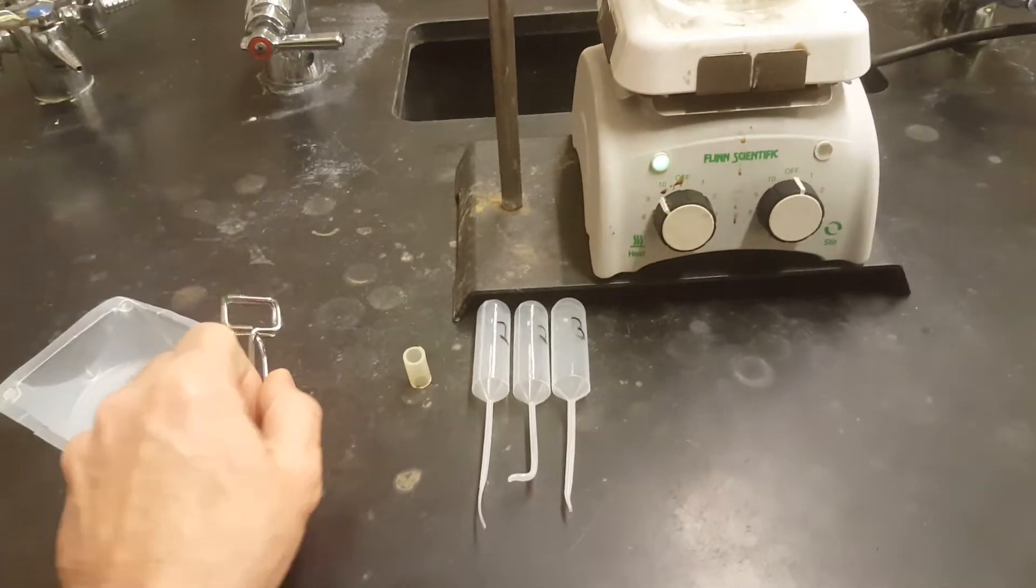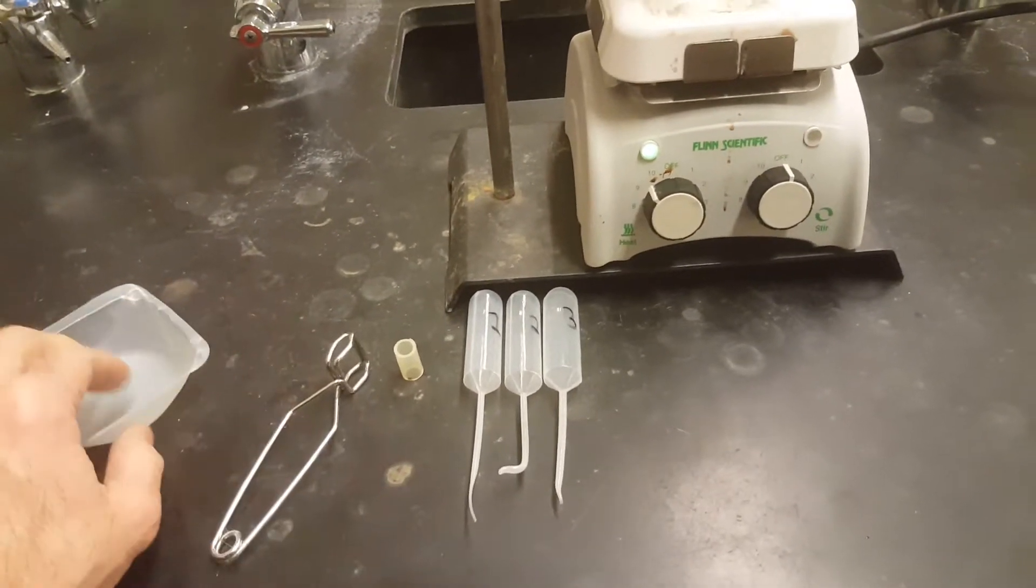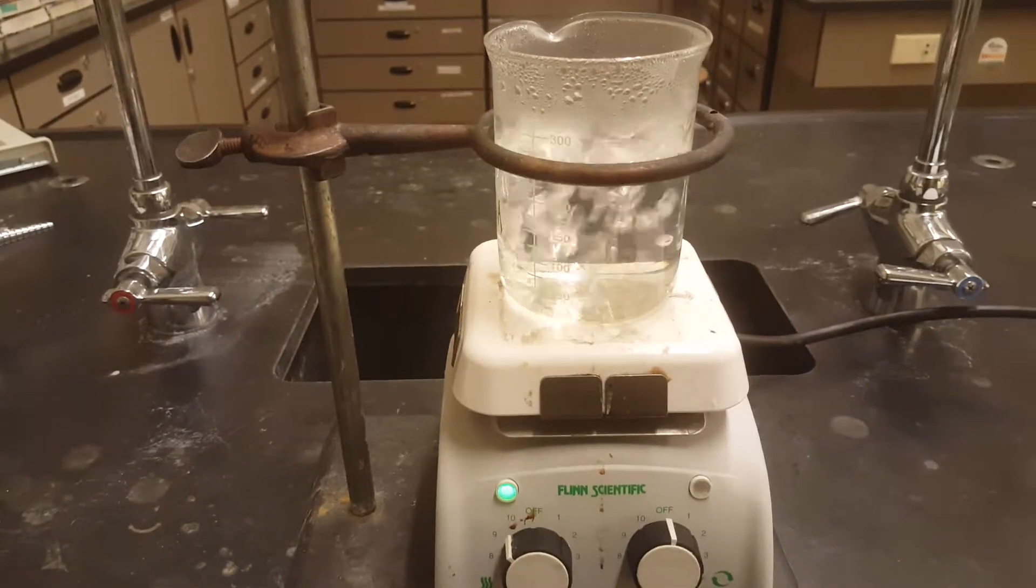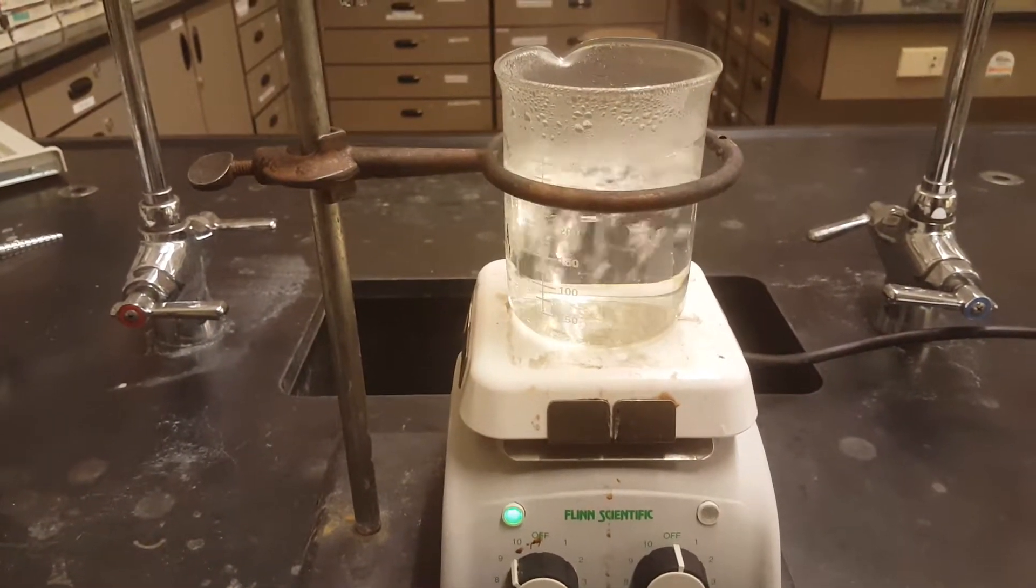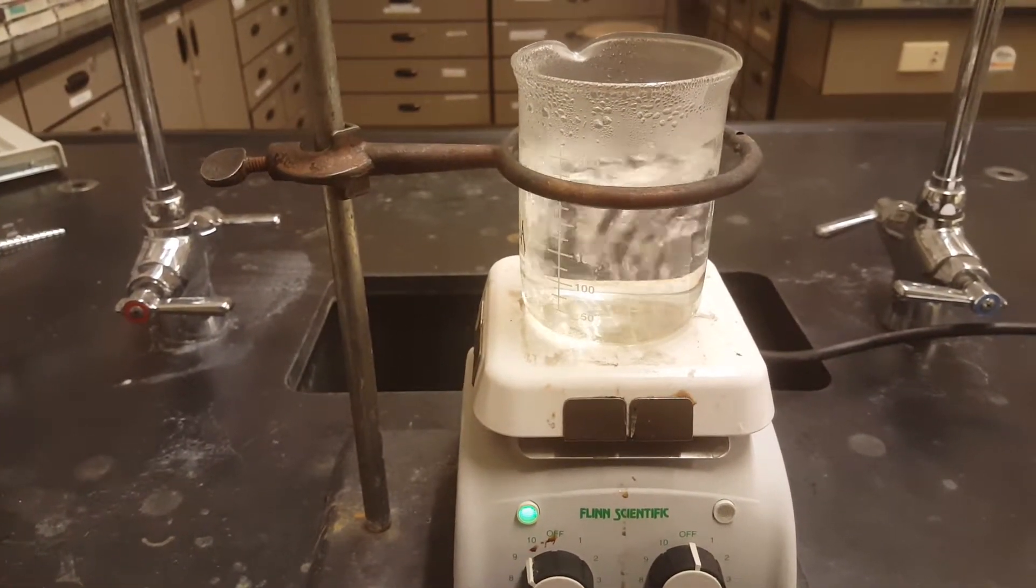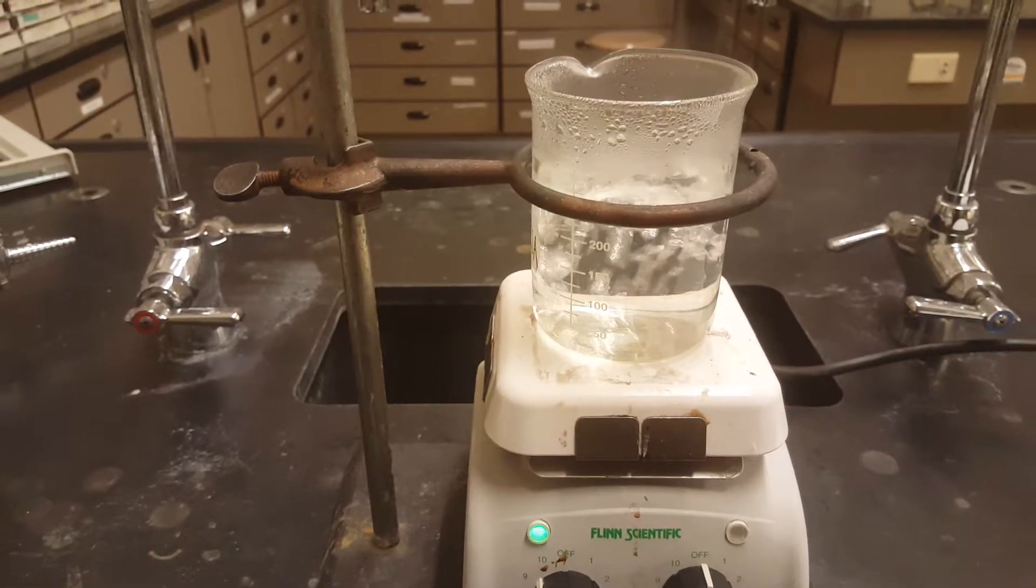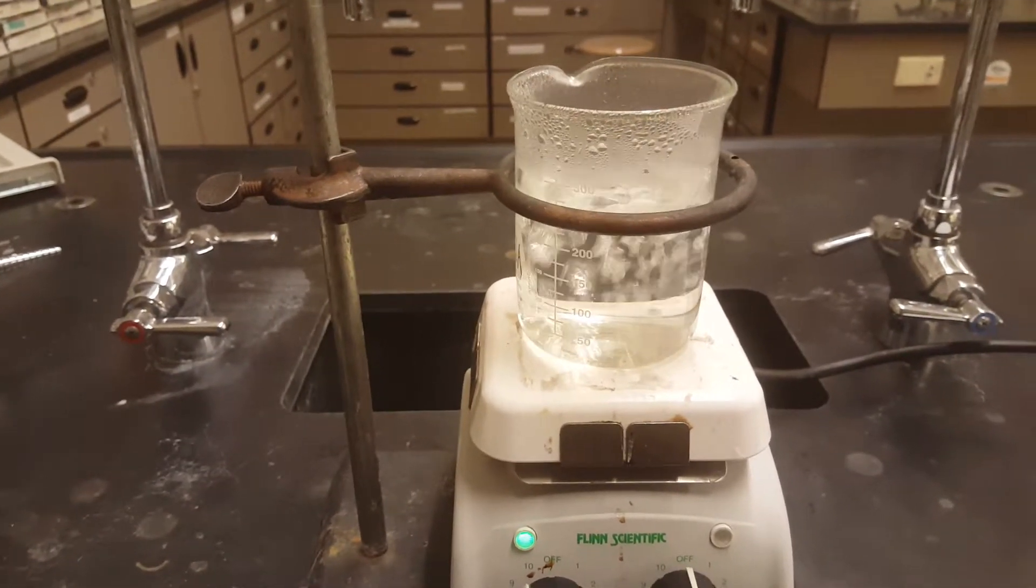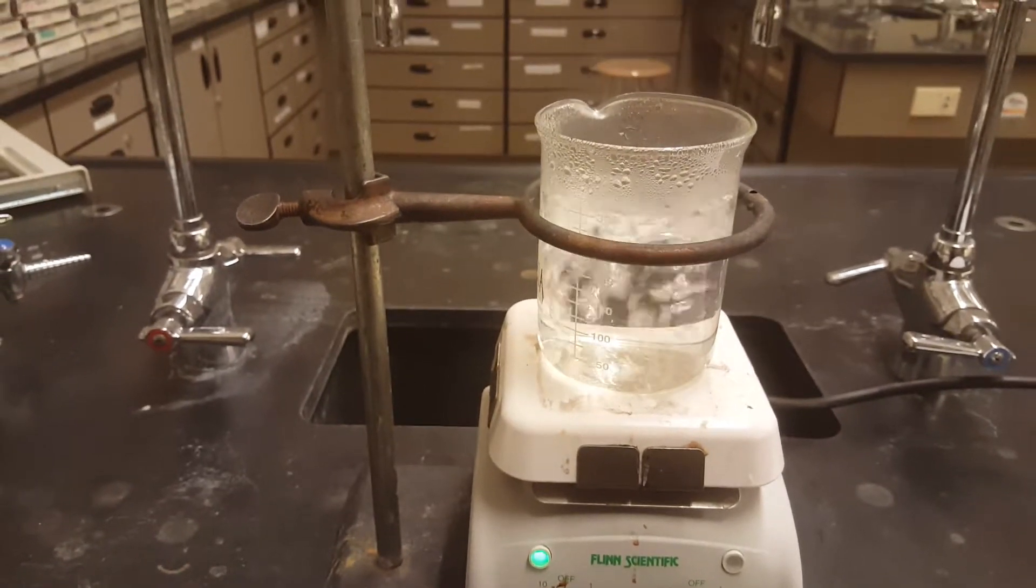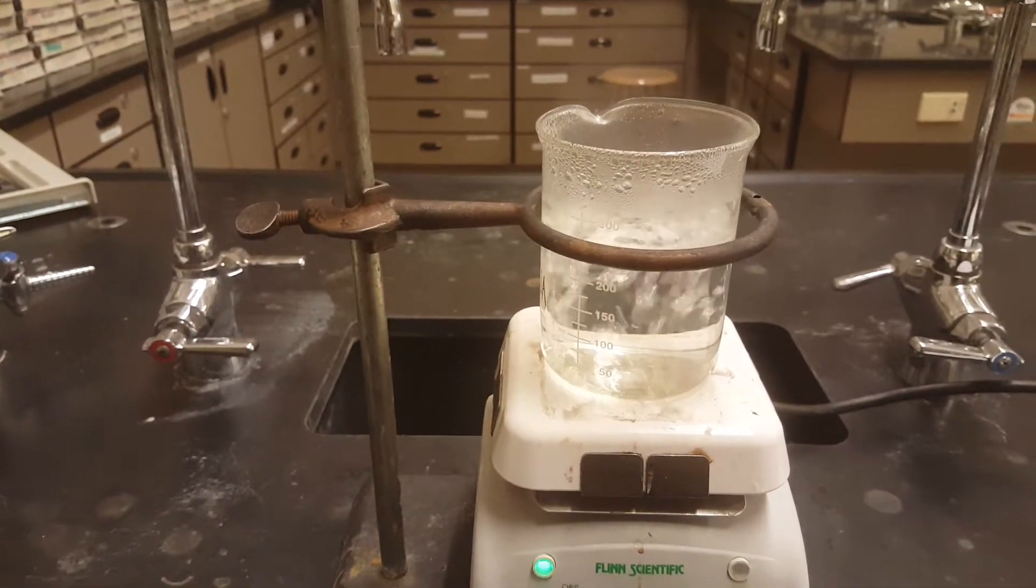Make sure you have a test tube clamp, a weigh boat, and about 300 milliliters of water in your 400 milliliter beaker to start. And make sure it's deionized. We're gonna boil water in here all day and tap water boiling away will leave behind lime scale. Make sure it's DI water or distilled water.